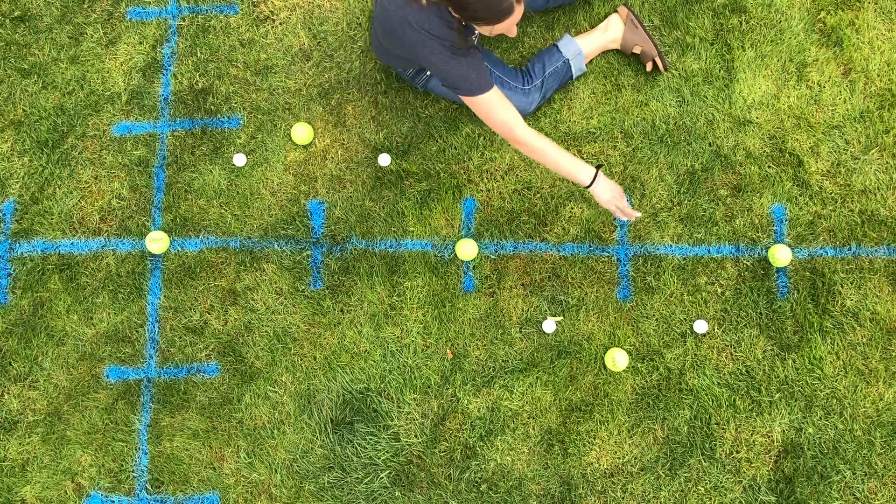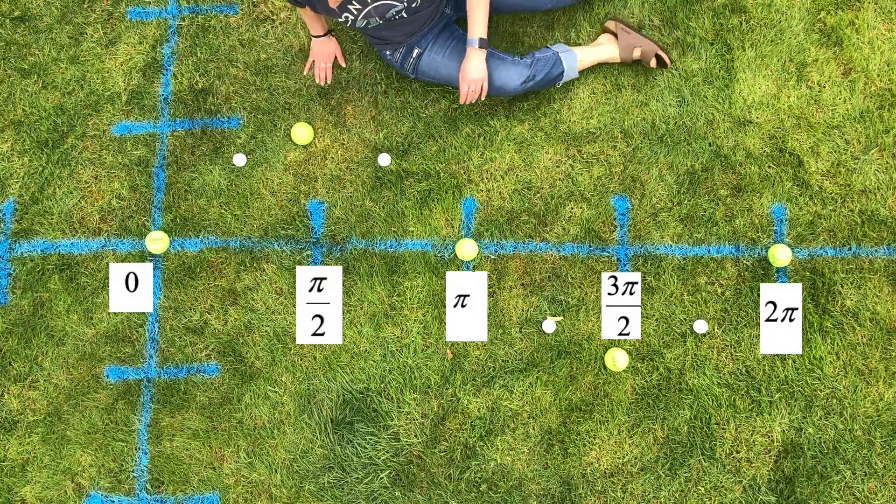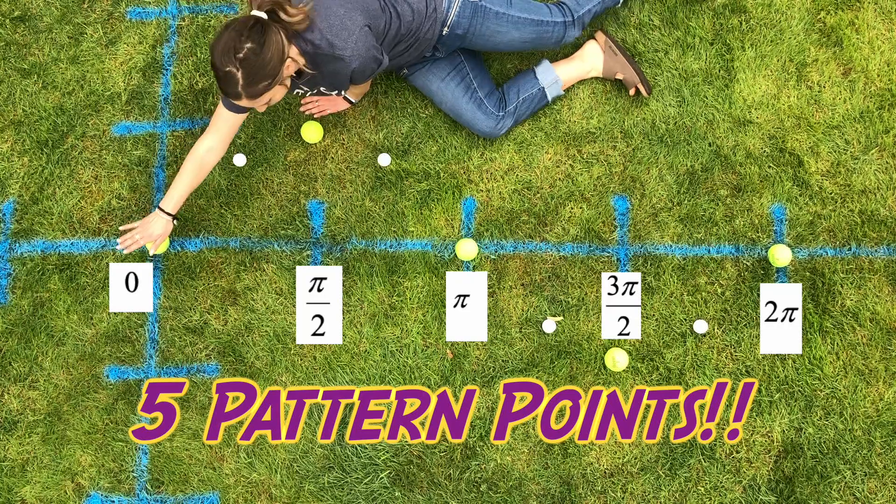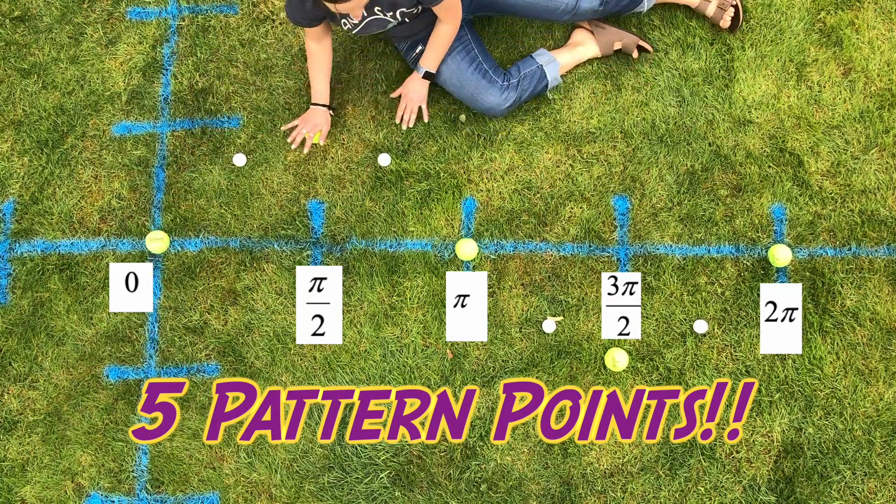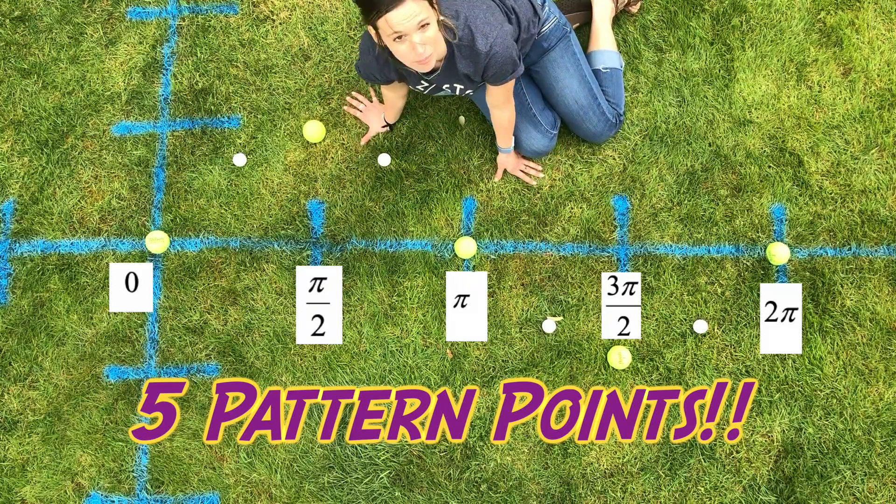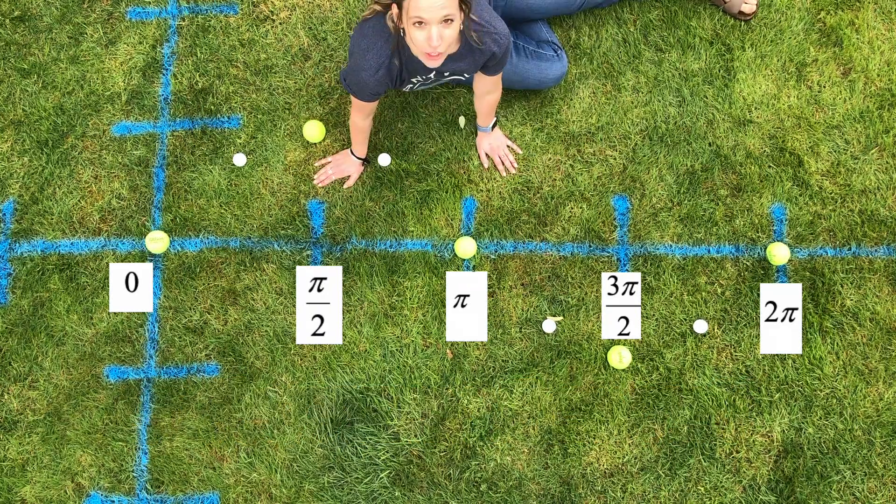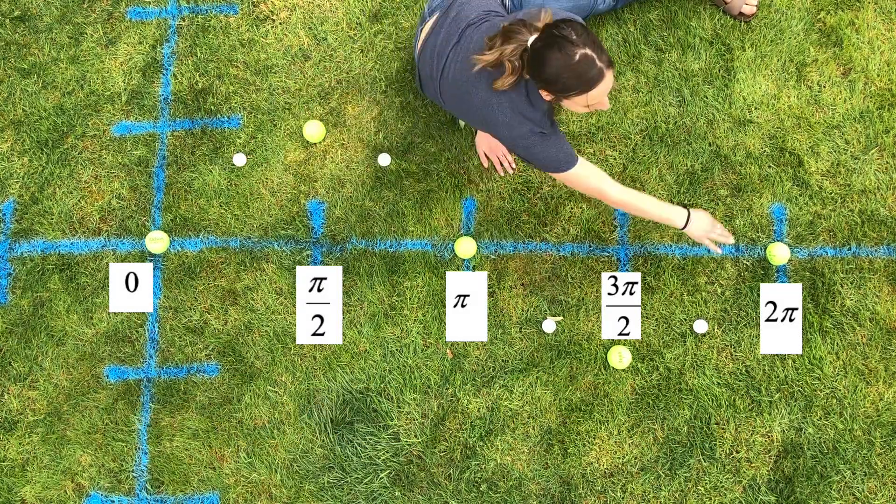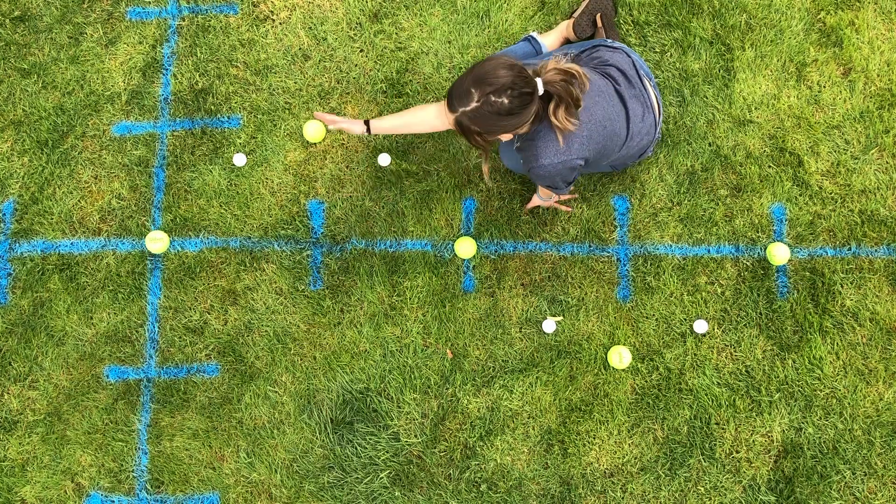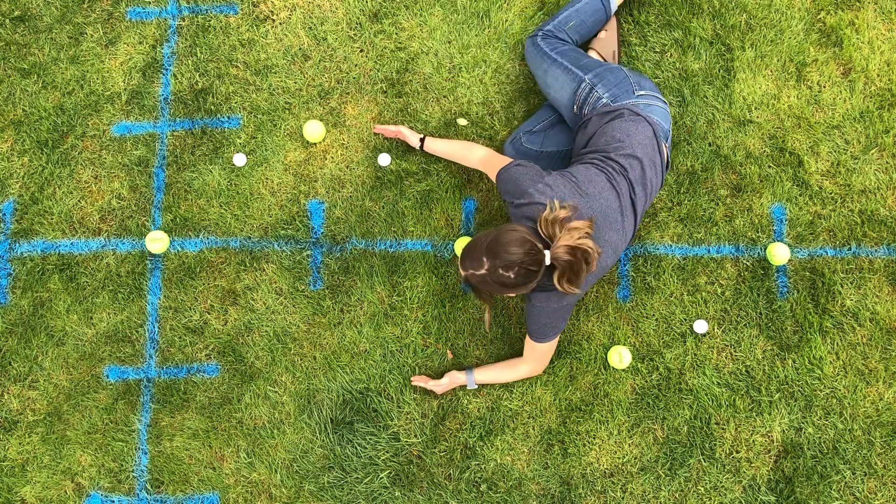Alright, so we have this nice pretty sine wave, and we have these five patterns, like really prominent pattern points. We start at zero, then we go high, back to zero, then we go low, back to zero. Always go high before we go low. So, we have one cycle of y equals sine theta, and the amplitude is one, which is half of the height.